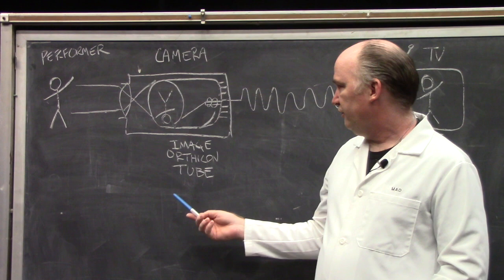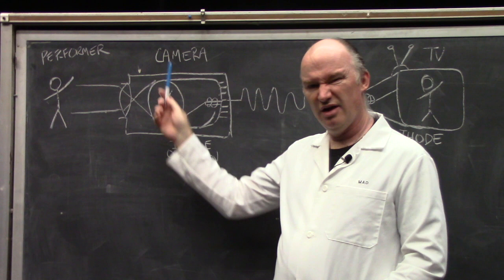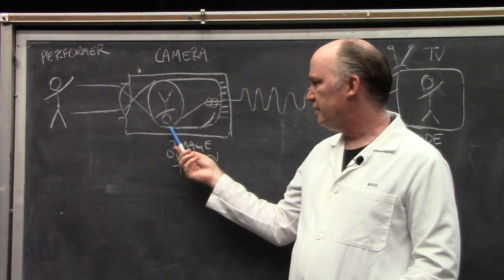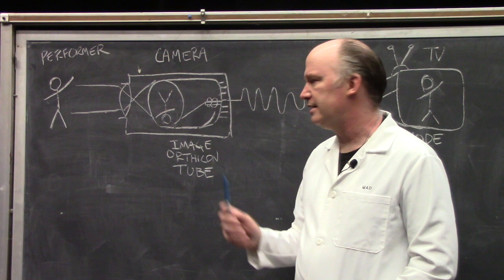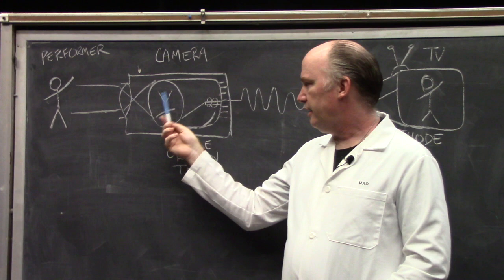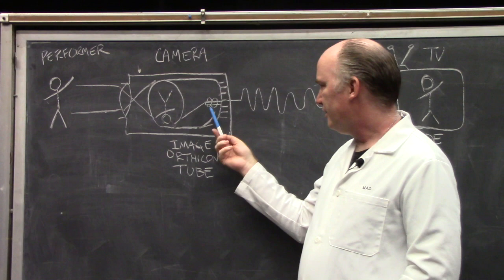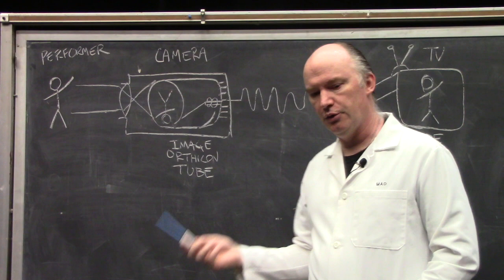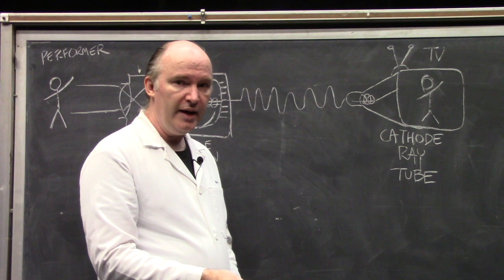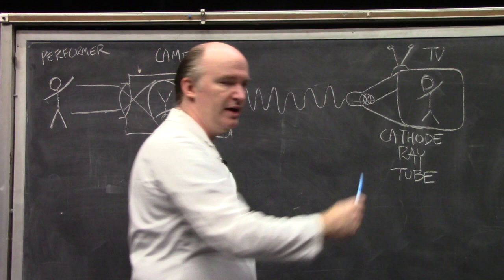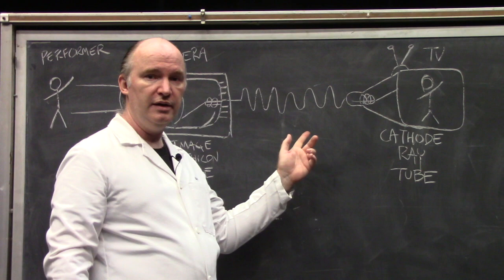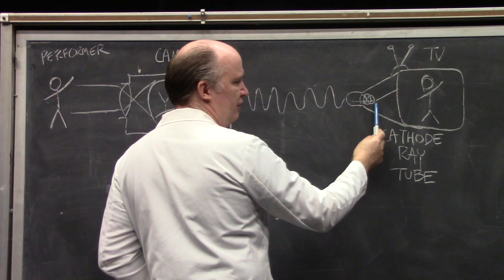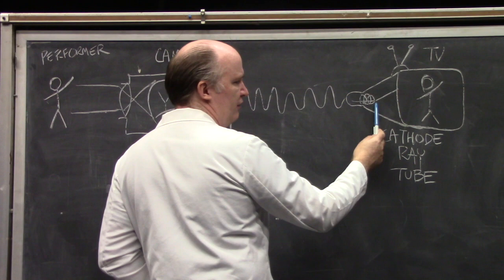In an analog video system, you would have your performer, you would have a camera, and then using a series of lenses you would project the image of your performer onto the surface of a special vacuum tube known as an image orthicon tube. The surface of the IMI, as it was known, was coated in a special substance that would react to the amount of light striking it. You would then have an electron beam that would sweep from side to side and then from bottom to top, and the outgoing signal would vary depending on the amount of light striking the surface of your tube. That signal would then be transmitted to your television, which had another vacuum tube inside it called a cathode ray tube. The cathode ray tube had a surface coated in a special substance that would glow depending on how strong the electron beam was. So your incoming signal would modulate the strength of that electron beam, and as it swept from left to right and top to bottom, it would recreate the image that your camera was pointed at.